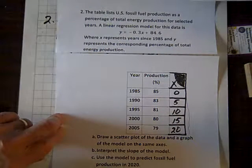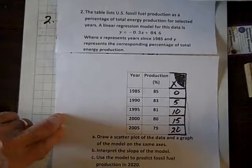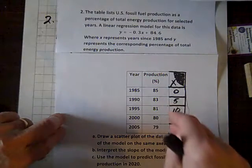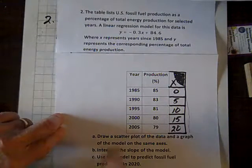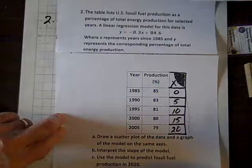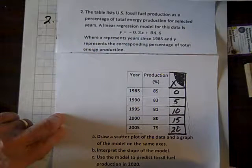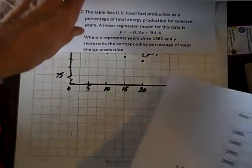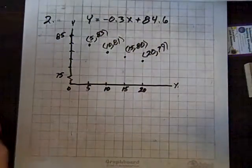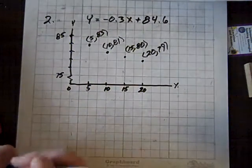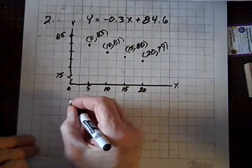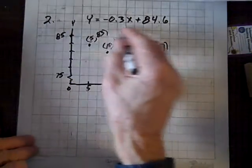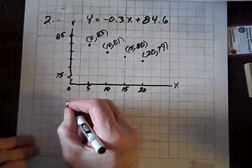The fossil fuel percentage of total energy production continues to drop. Now, the first task is to draw a scatterplot of the data and a graph of the model on the same axis. So, I've got a graph of the scatterplot, and now we have to graph this equation also.